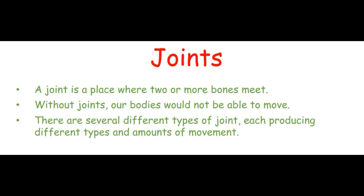So we're going to start by being able to define what a joint is. The easiest way is to think about a joint as just being a place where two or more bones meet. Without these joints, our body isn't going to be able to produce any movements. However, not all joints actually produce movements — there are actually several types of joints, and all of them have different amounts of movement or different functions.